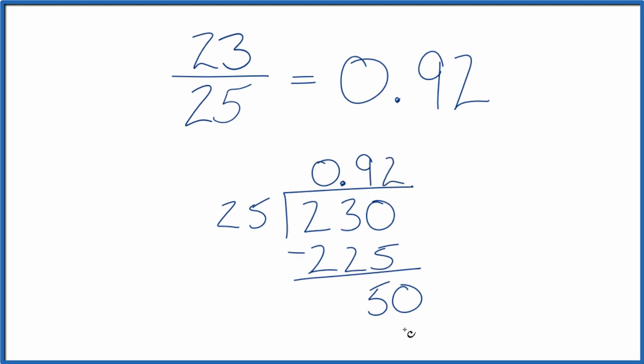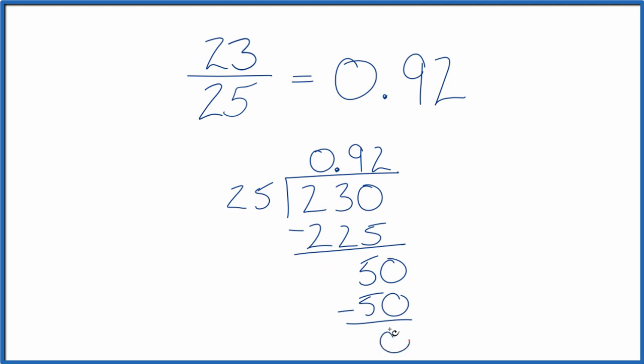2 times 25, that gives us 50. And we subtract 0 as our remainder.